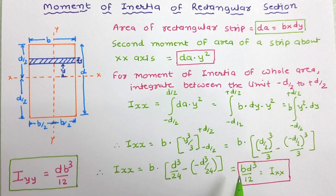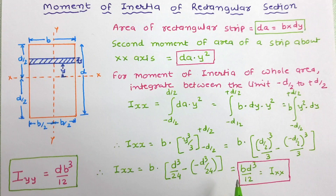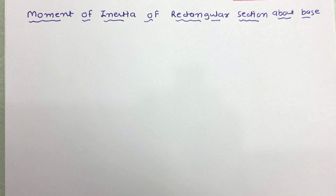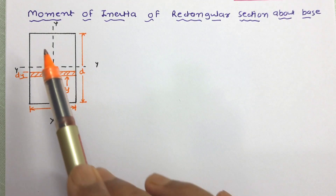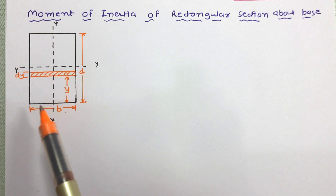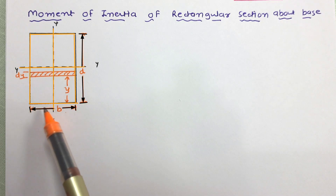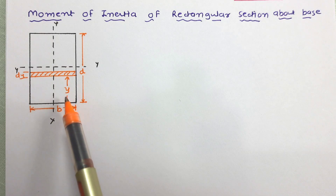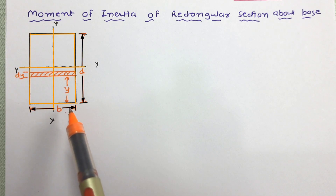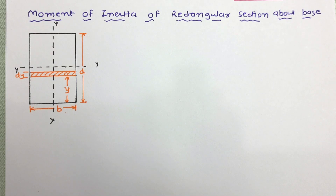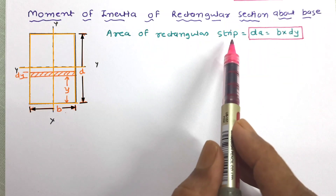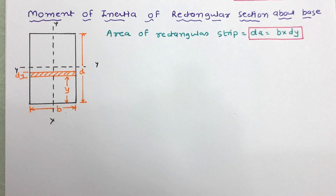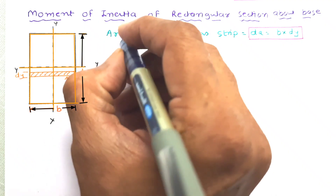These are the important equations to determine the moment of inertia of rectangular section about the centroidal axes. Now let us work out the moment of inertia of the rectangular section about its base. This is a rectangle having width b and depth d. We want to work out the moment of inertia of this rectangle about its base. Consider an elemental strip of width dy which is at a distance y from the base. First, we will work out the area of this elemental strip, which is width b times thickness dy.